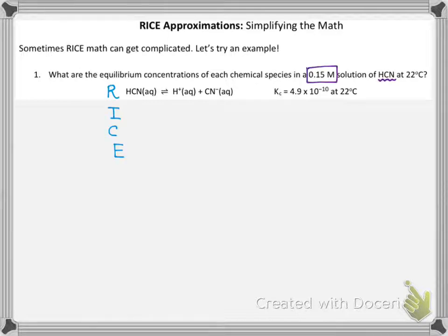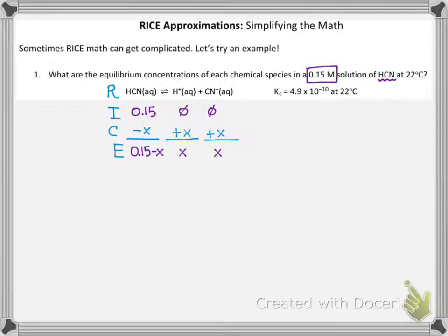In this problem, we're going to find the equilibrium concentrations of all the different chemicals that exist in a 0.15 molar solution of HCN. That means we have our initial concentration of HCN as 0.15, but no H⁺ or CN⁻ yet. We're going to put the change row in the RICE table stoichiometrically in terms of x, and then combine the initial and the change to figure out what it'll be at equilibrium in terms of x.